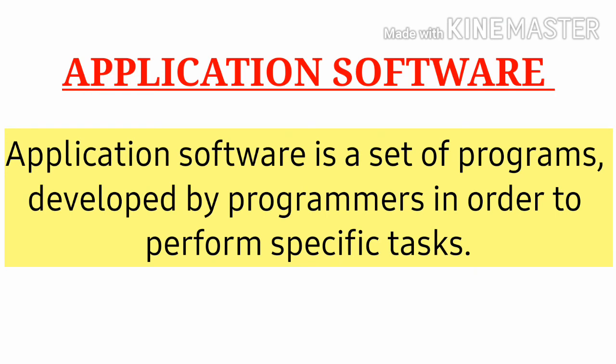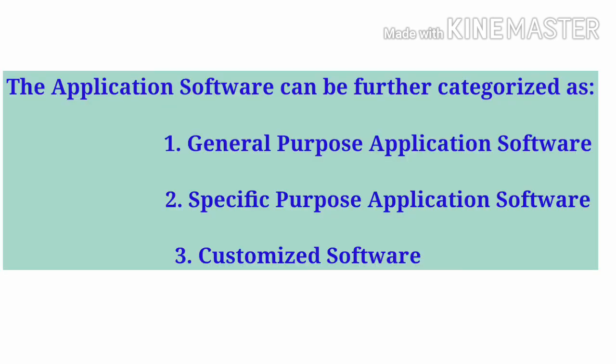Application Software is a set of programs developed by programmers in order to perform specific tasks. Application software can be further categorized as general purpose application software, specific purpose application software, and customized application software.